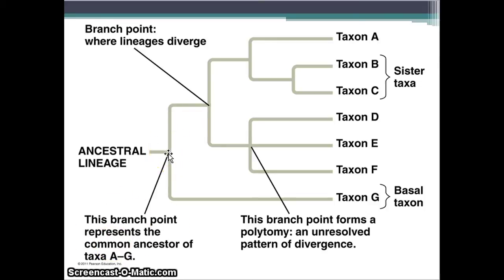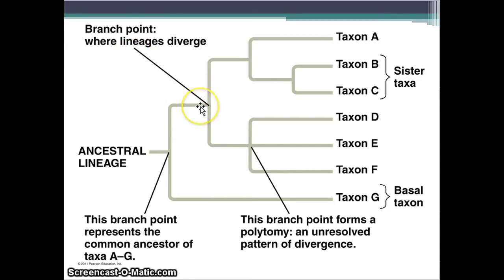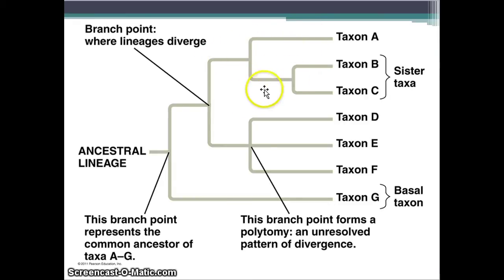A branch point is where lineages diverge. They used to share an ancestor, but through the evolution process, their genes became really different, so they split into two species. And then those two species split more and more. So every single time you have a branch point, you're talking about the splitting of the organism.